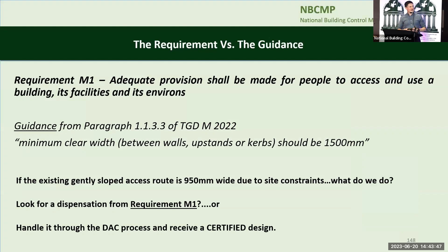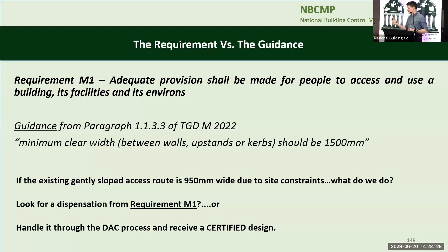Requirement M1: adequate provision shall be made for people to access and use a building, its facilities, and its environs. Whereas the guidance from TGDM will tell you that the minimum clear width between walls, upstands, or curbs should be 1,500mm. That's not always possible, particularly with existing buildings. If we had an existing gently sloped access route that's 950mm wide due to site constraints, we could handle that through the DAC process — providing very clear particular information as to why the site constraints are that way, why it can't be upgraded, and whether that is adequate. You get a certified design — the best comfort blanket any designer could ask for.